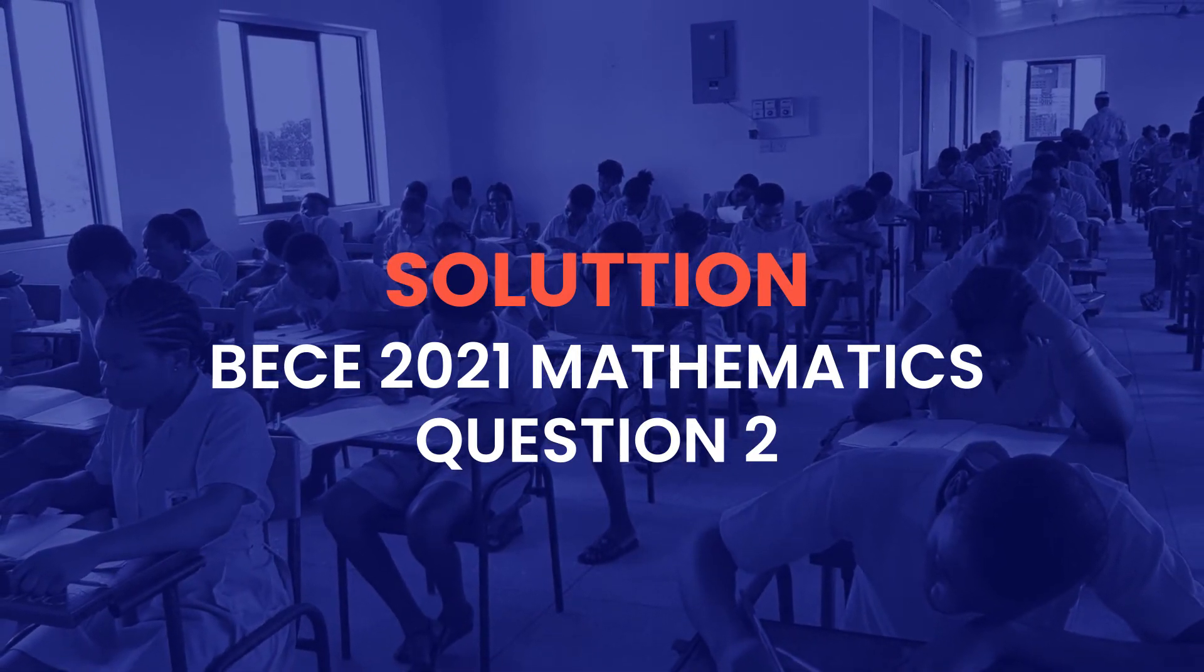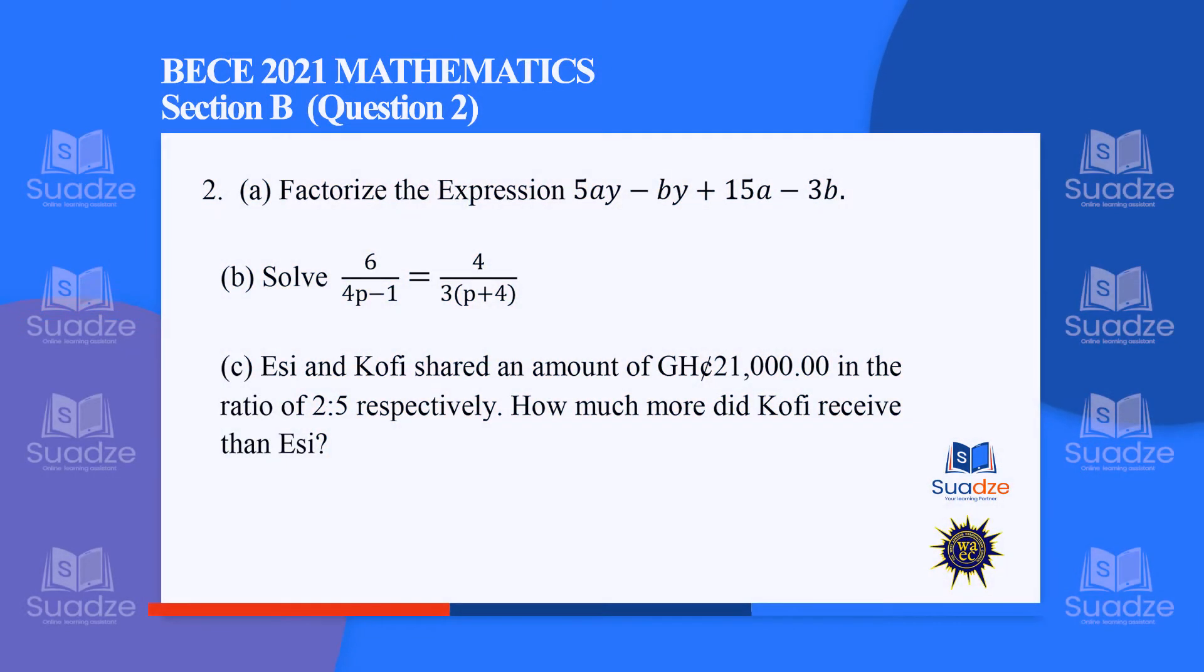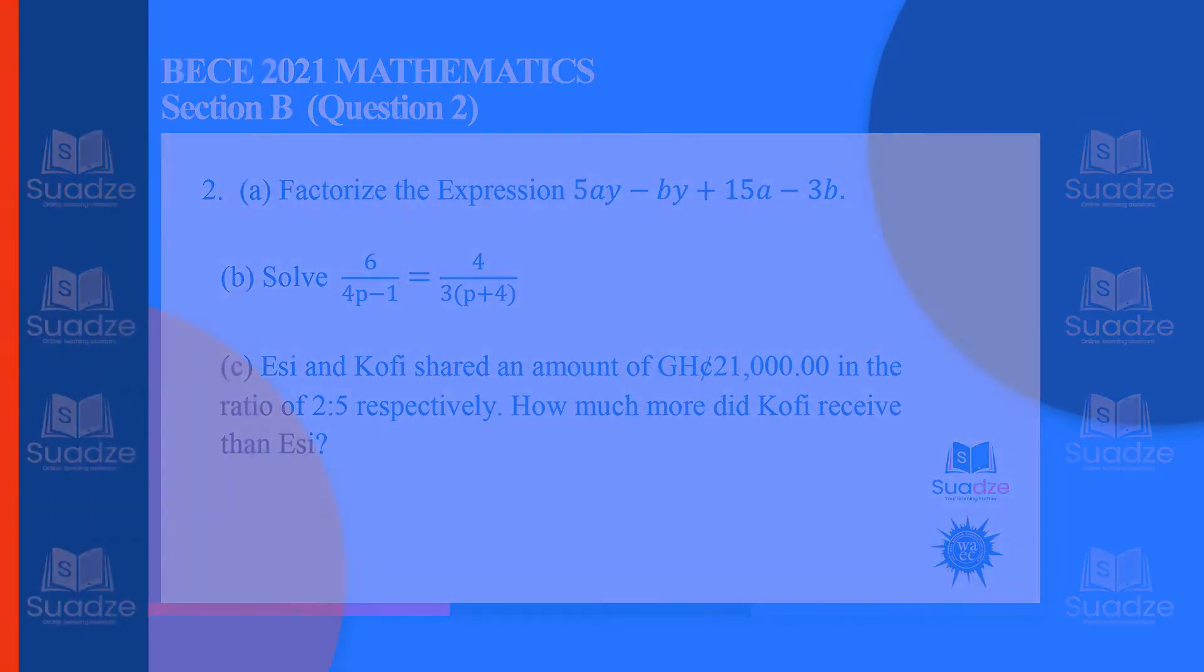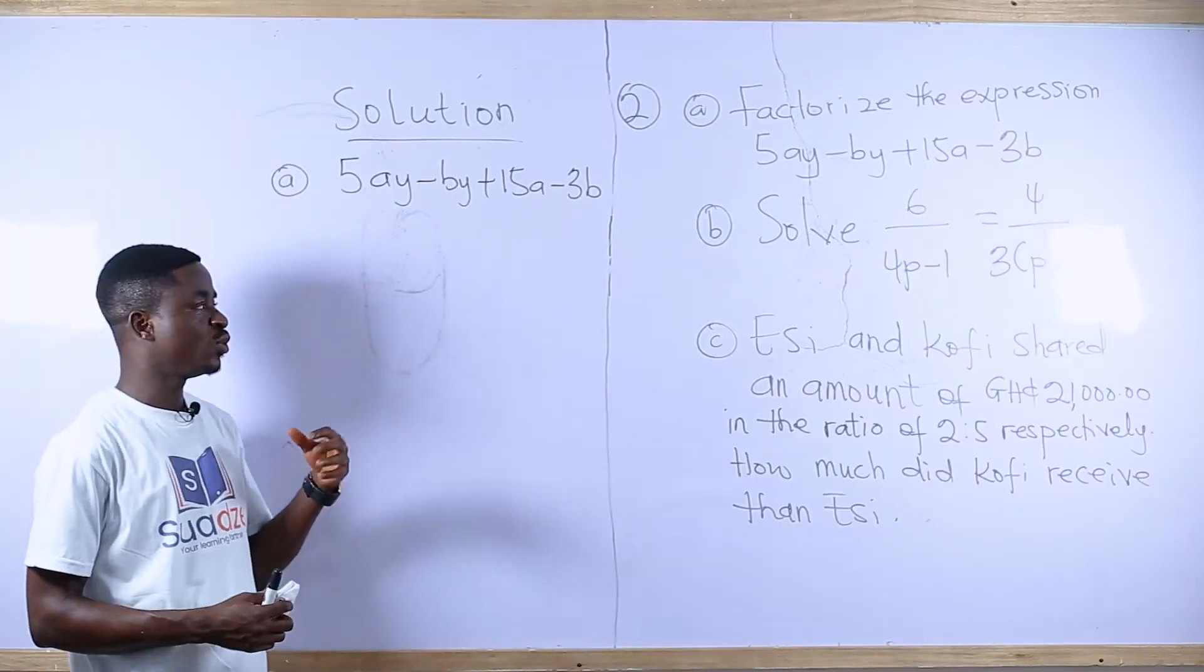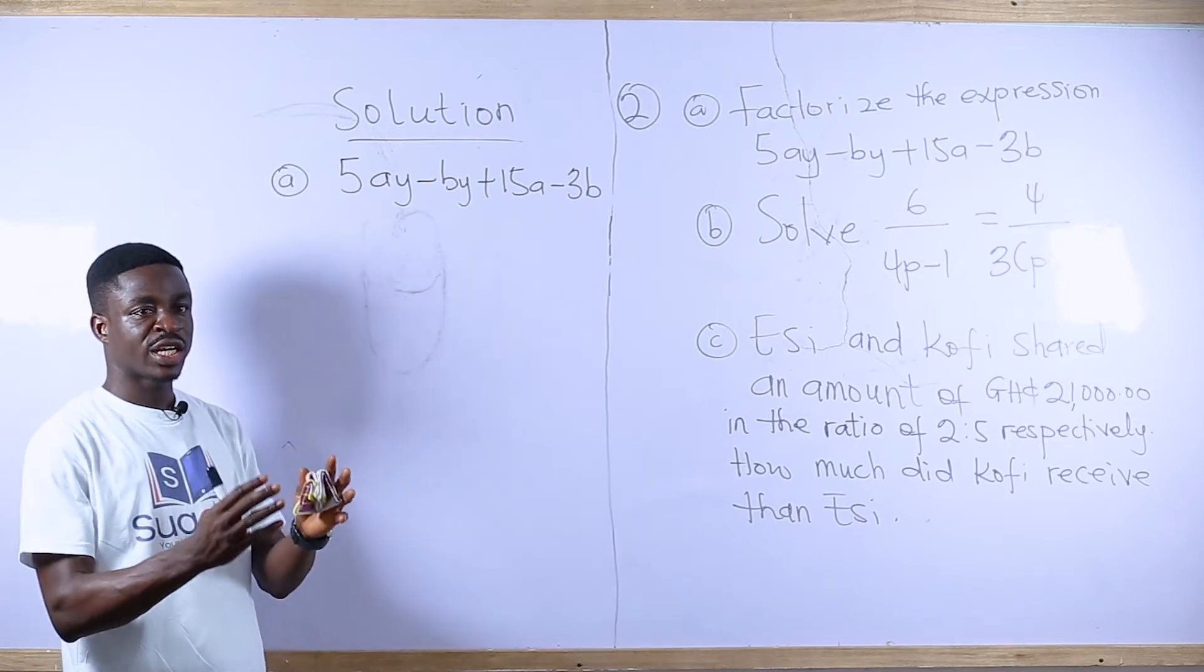Now we are going to look at the solution to question two. The A says factorize the expression 5ay - by + 15a - 3b. This question is about factorization. In factorization, what we do is you look for the common term among the expression and then you bring it out.